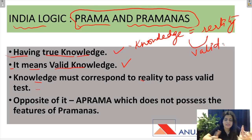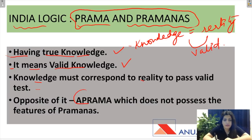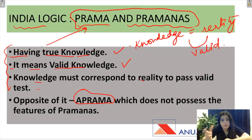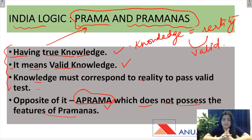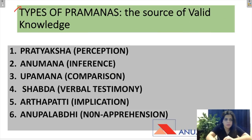If knowledge is corresponding to reality, then it is called valid. Then comes Aprama. Aprama means the opposite of Prama. Where true knowledge is absent, which cannot be valid, and which does not correspond to reality — that knowledge is called Aprama. The features of Pramanas are: true knowledge, valid knowledge, and knowledge must correspond to reality.